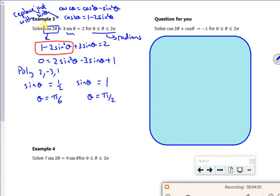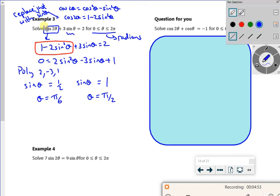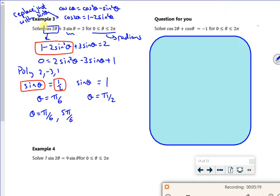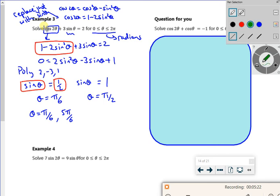If I look on the graph, if I graph y equals sin theta and y equals a half from 0 to 2 pi, then the other value I'll get out will be 5 pi by 6. If I graph the sin theta and the 1 between 0 and 2 pi, that's the only value I get out.